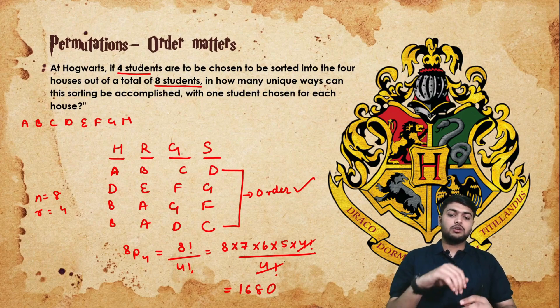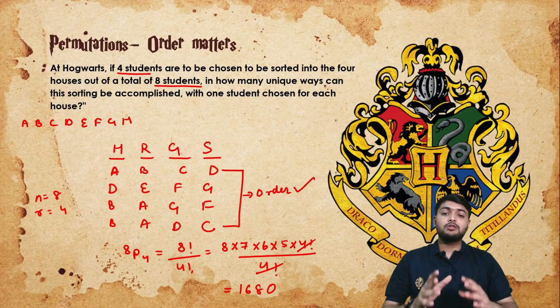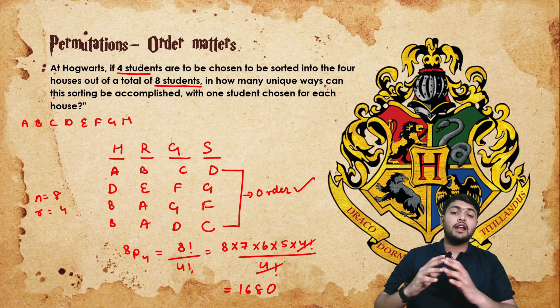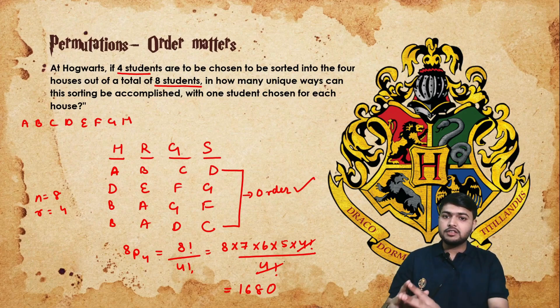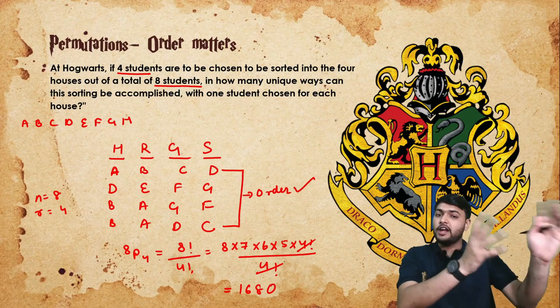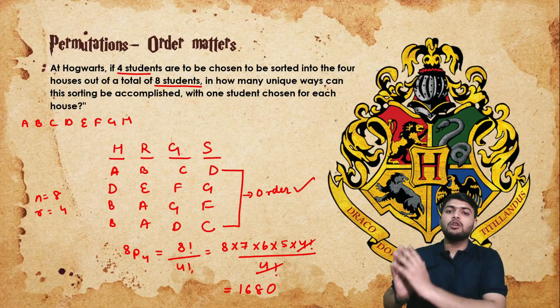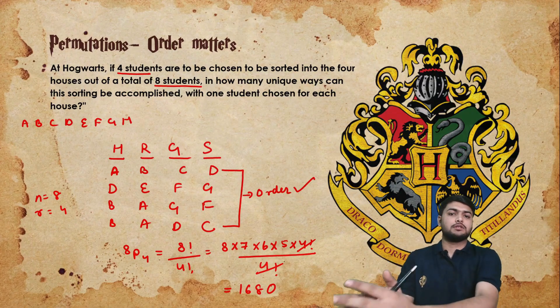So there are 1,680 ways to put 4 students out of 8 students into the 4 houses.